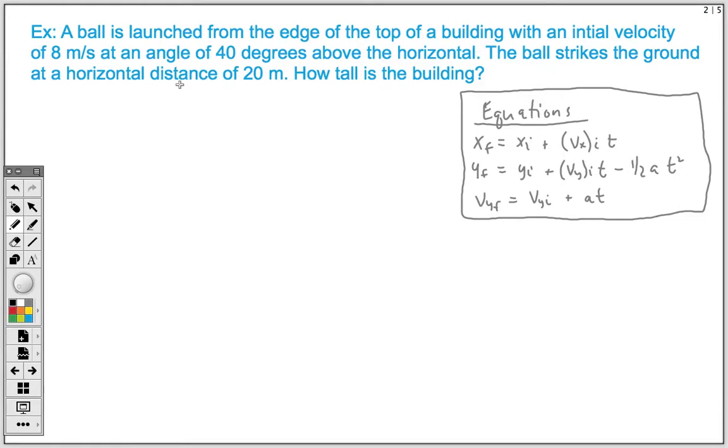Our problem for today is a ball is launched from the edge of the top of a building with an initial velocity of 8 meters per second at an angle of 40 degrees above the horizontal. The ball strikes the ground at a horizontal distance of 20 meters. And our question is, how tall is the building?